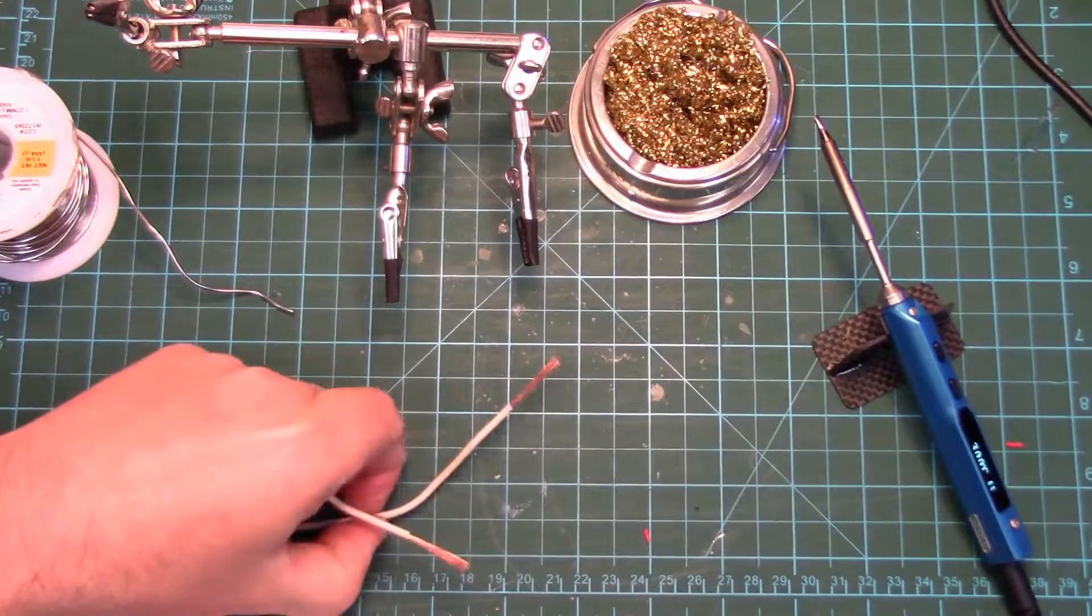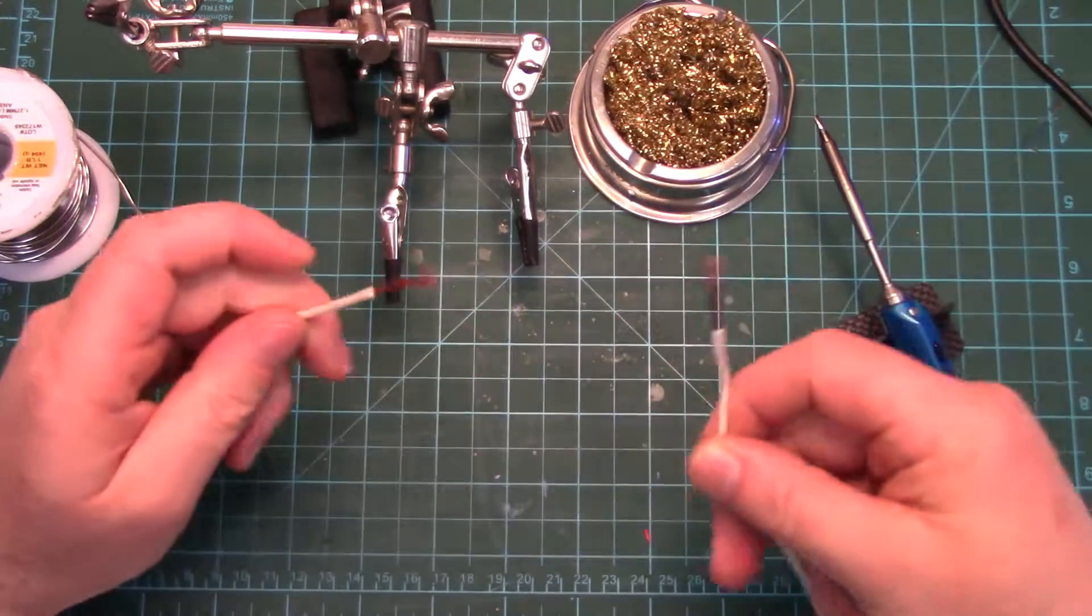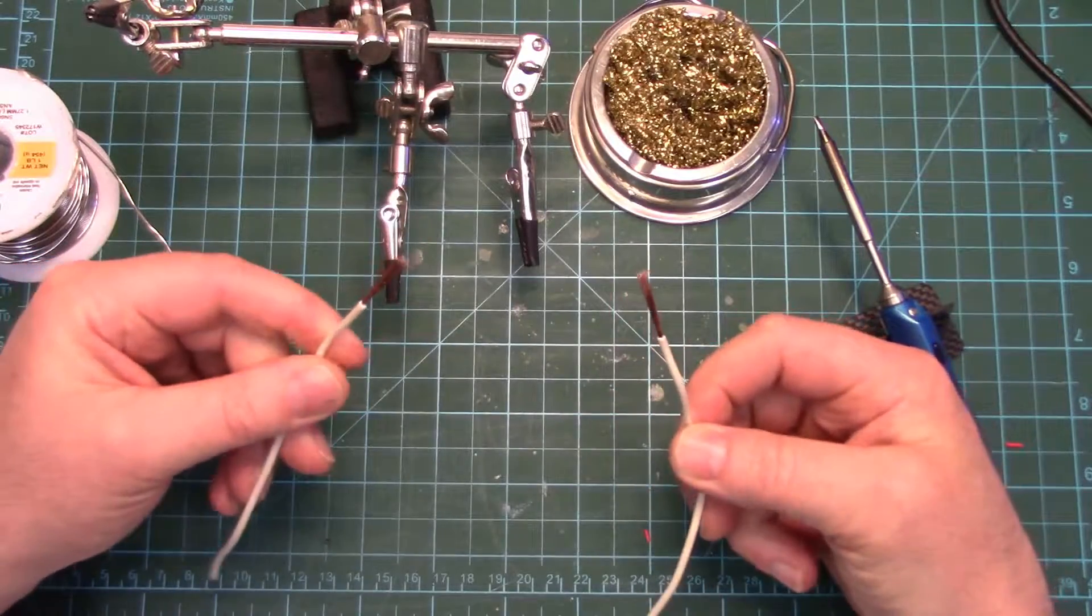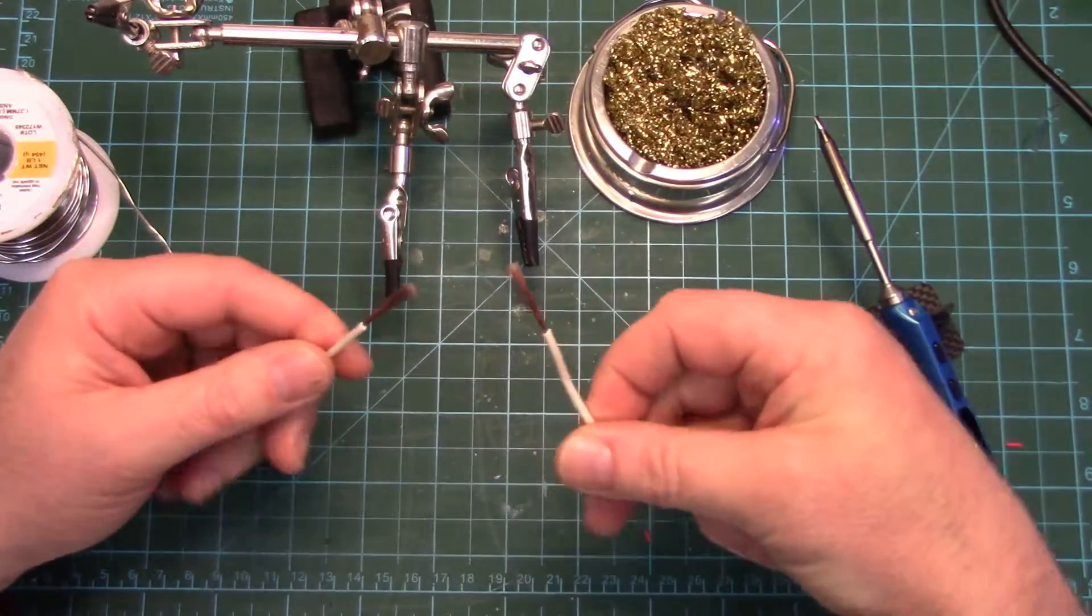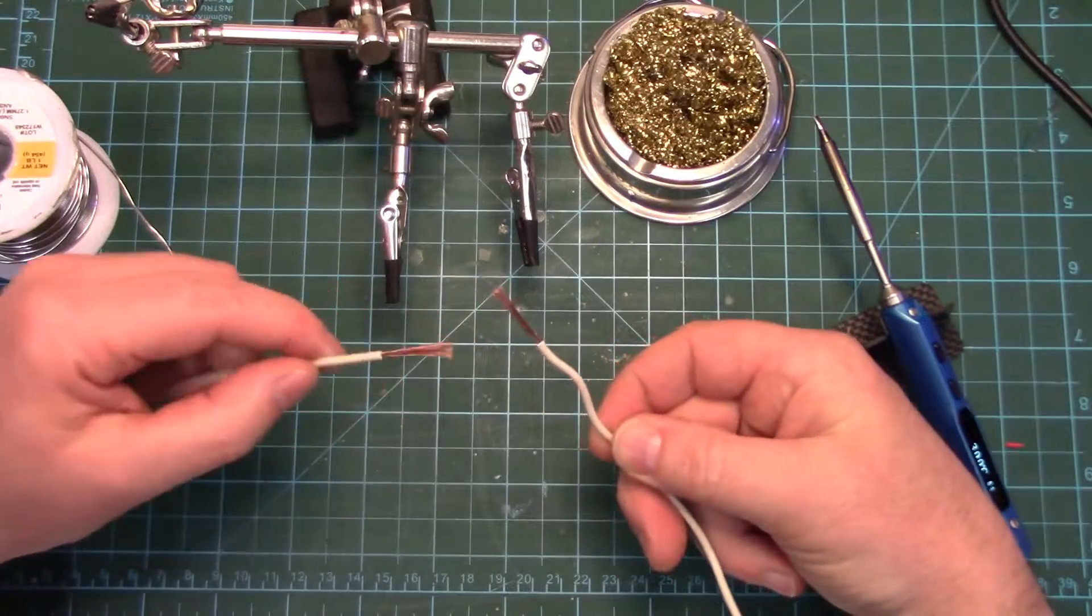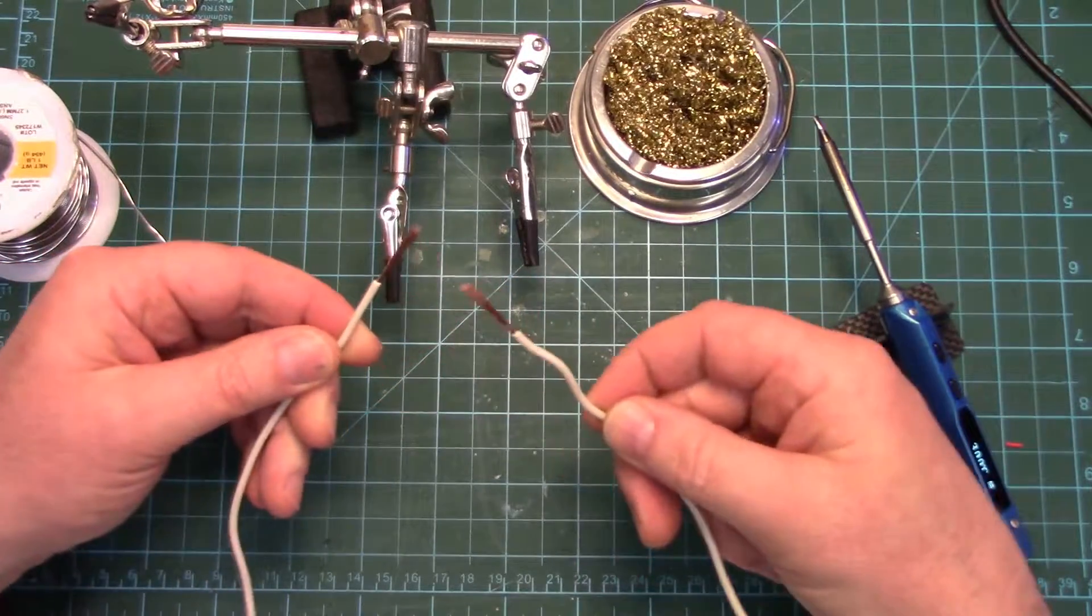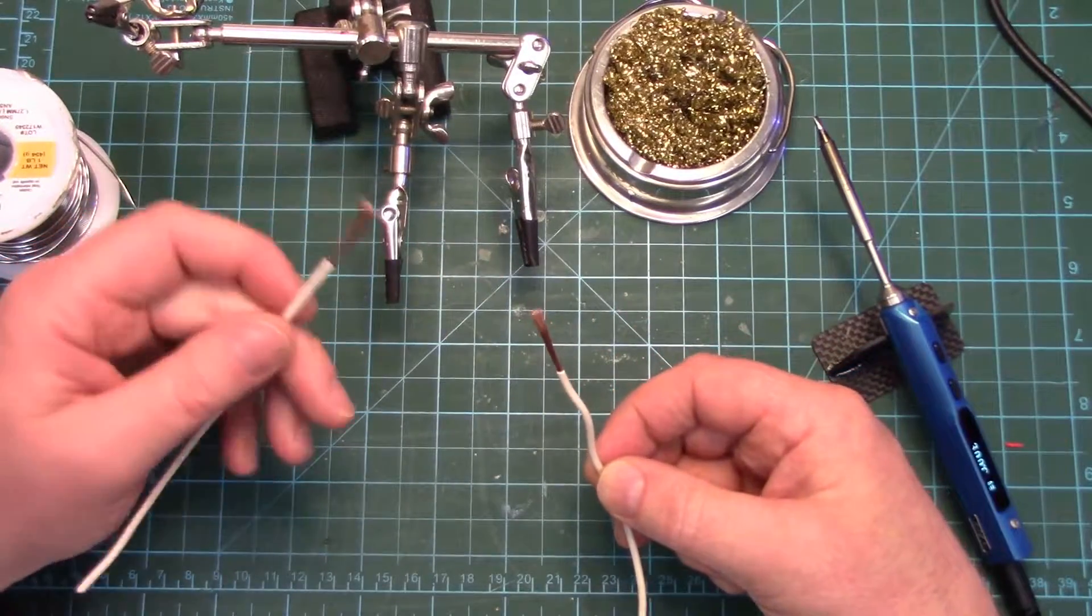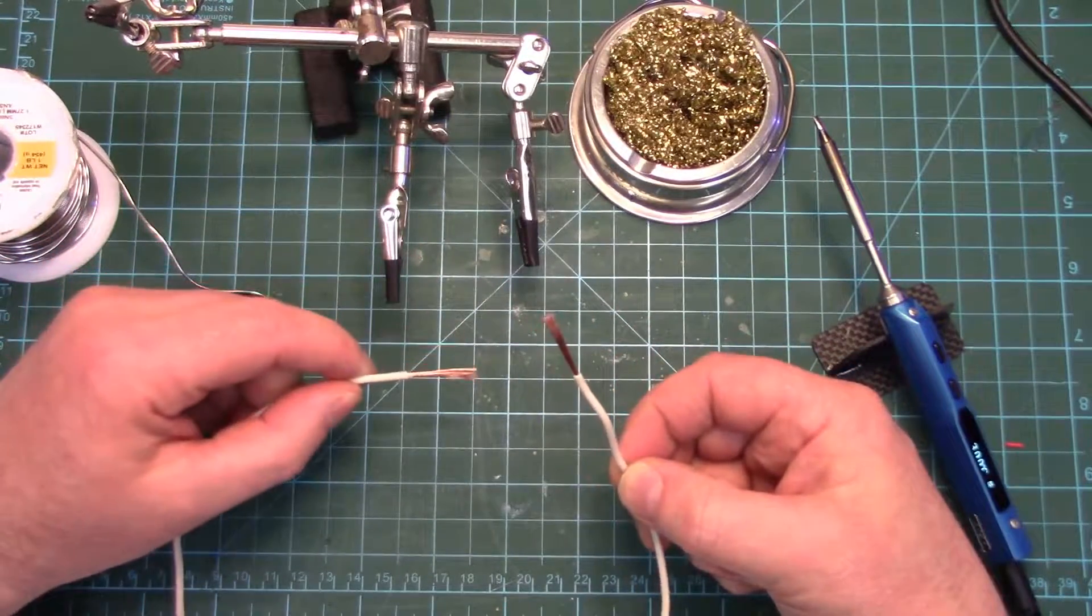Next up is the good old lineman splice. This is probably the most familiar to most people. The drawback with lineman splices is you need a lot of length of wire to do them correctly.